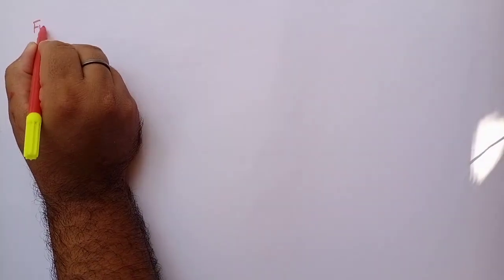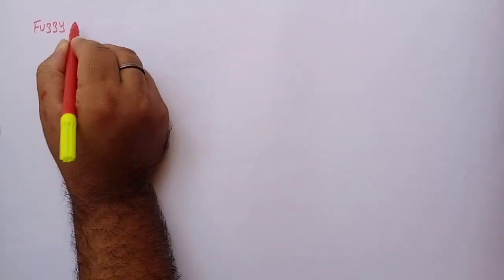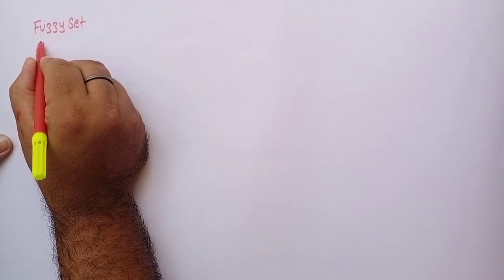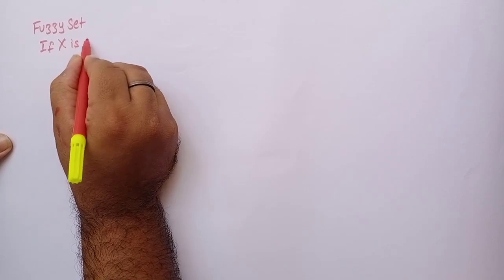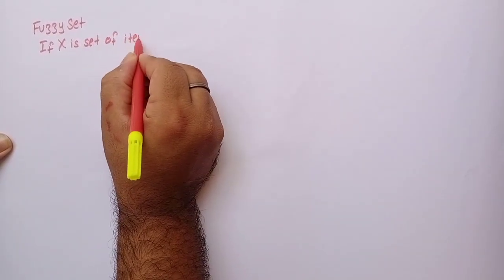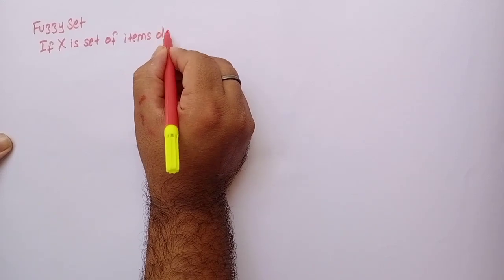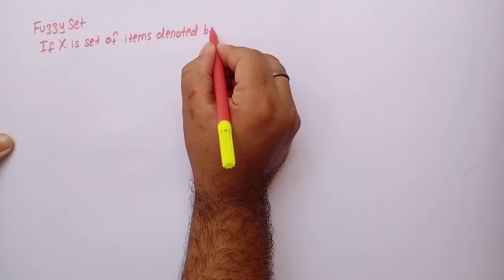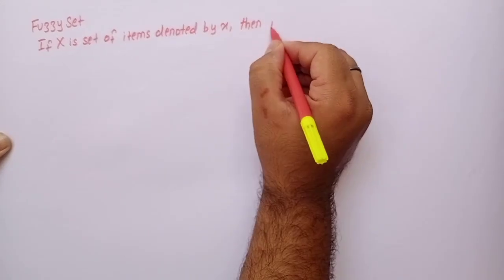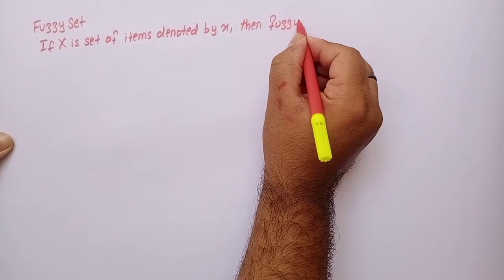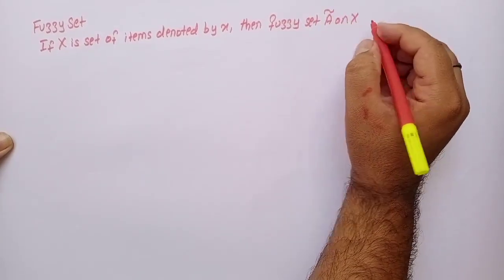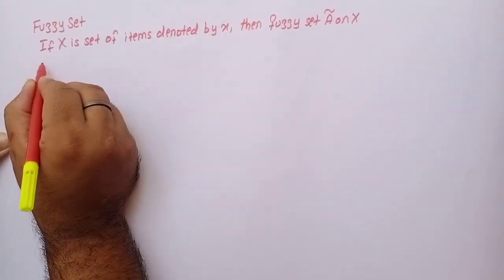Hello everyone, today we are going to learn fuzzy set. Now what is fuzzy set? If X is a set of items denoted by x, then fuzzy set A on X is defined as A equals (x, membership of x) where x belongs to set X.